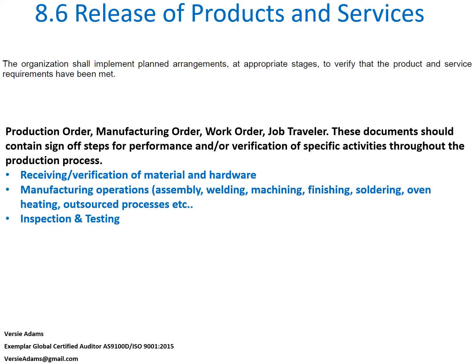Starting with the very first subsection of 8.6, it states that the organization shall implement planned arrangements at appropriate stages to verify that the product and service requirements have been met. As an auditor, what I'm looking for in terms of planned arrangements at appropriate stages are documents typically referred to in manufacturing environments as a production order, manufacturing order, work order, or most commonly a job traveler. What these documents should contain are sign-off steps for performance and a verification of specific activities throughout the production process.